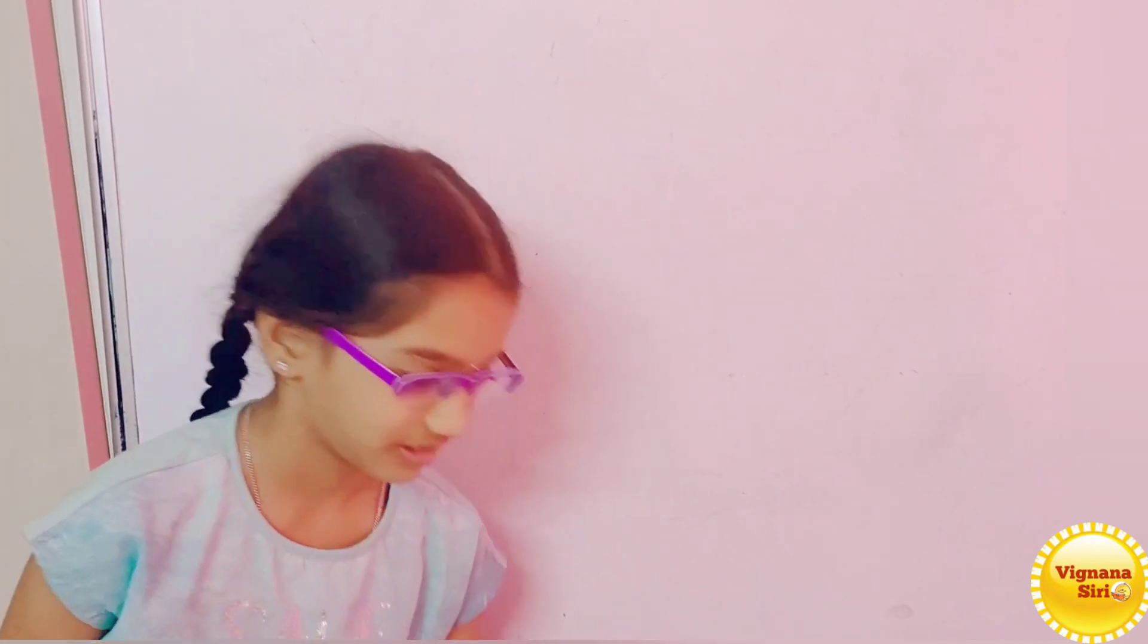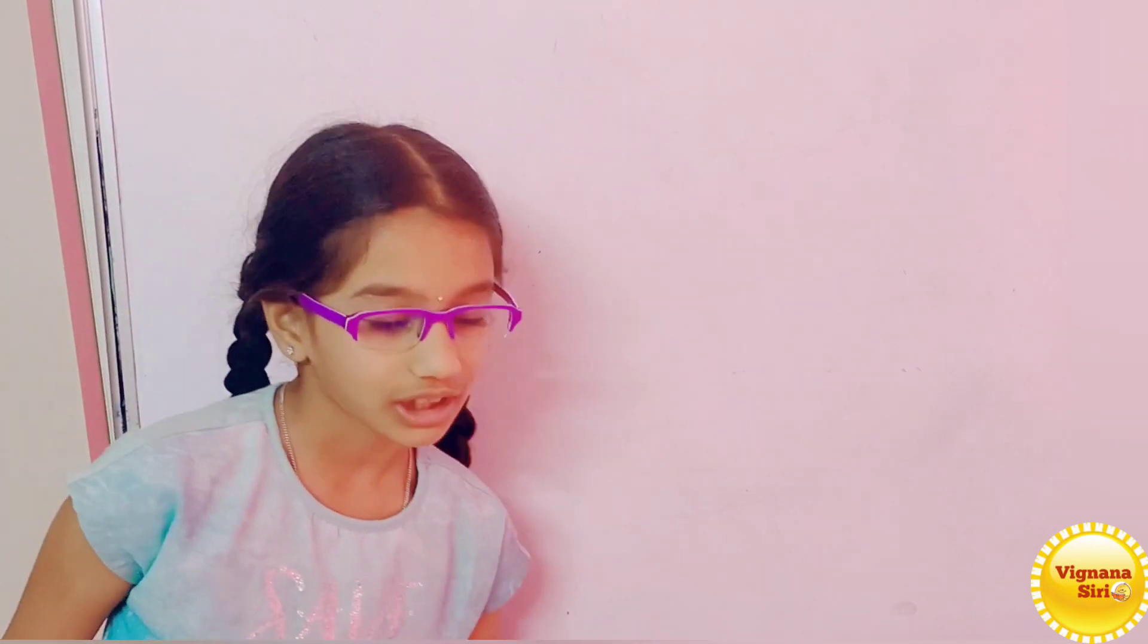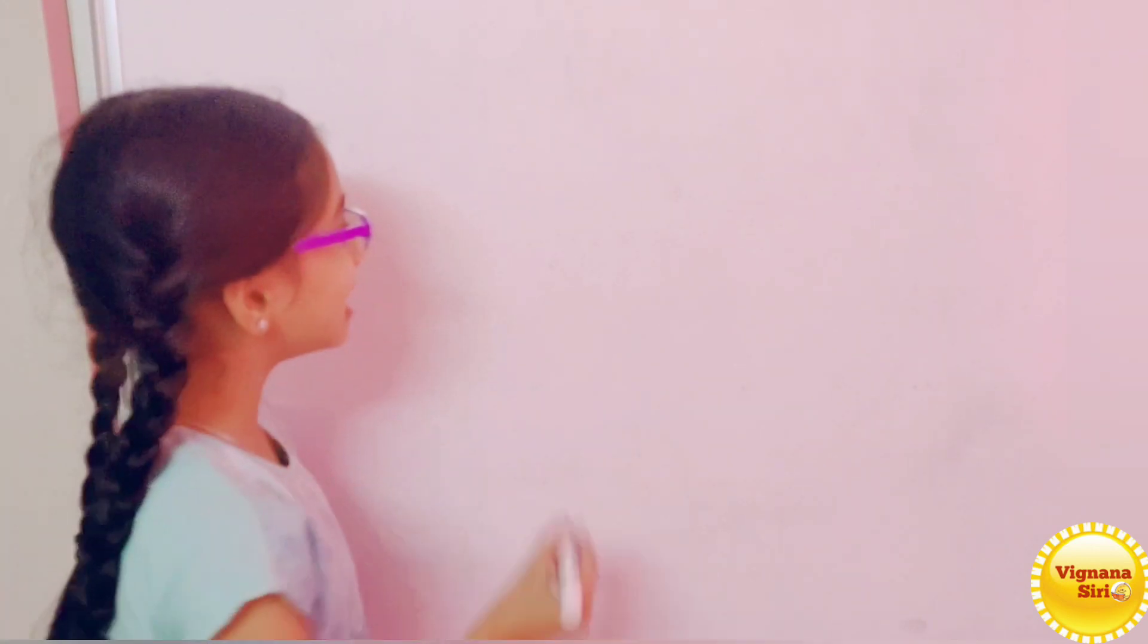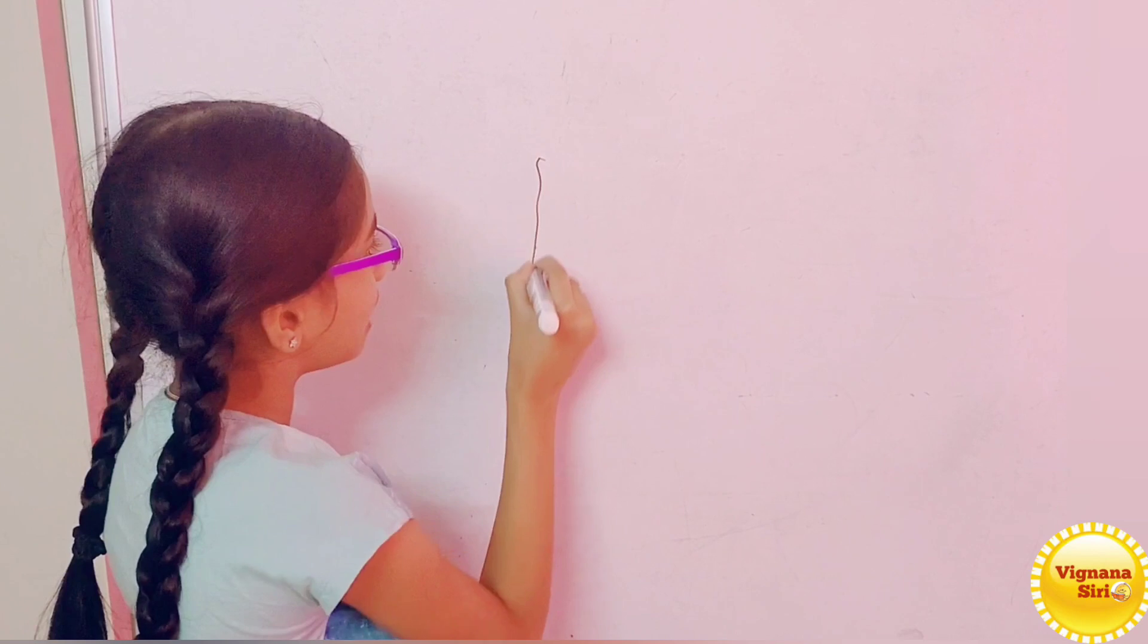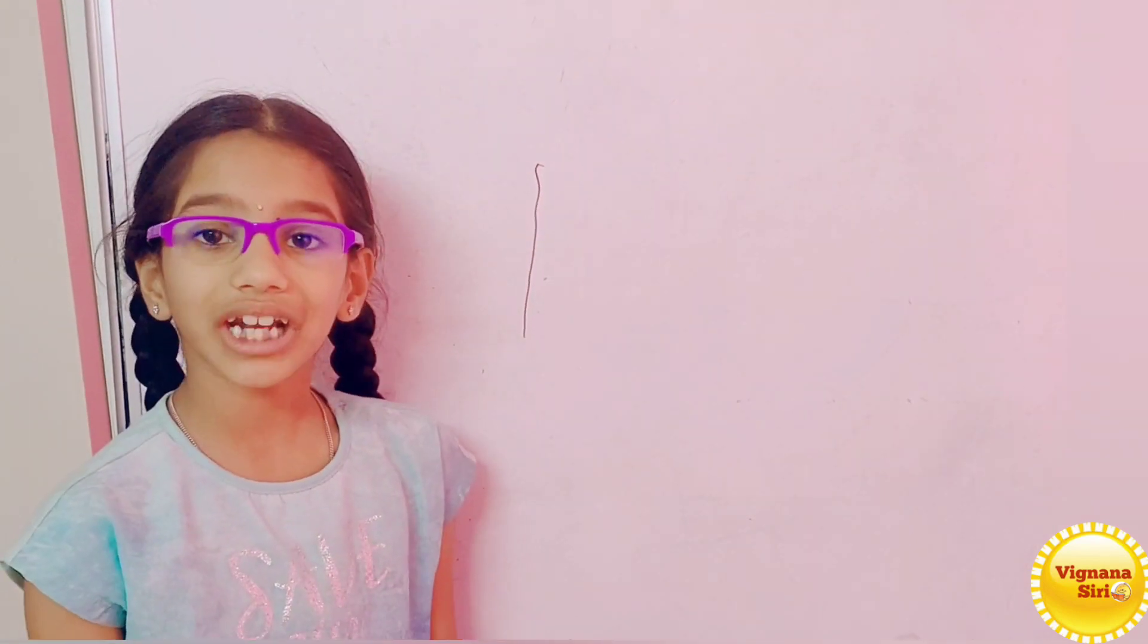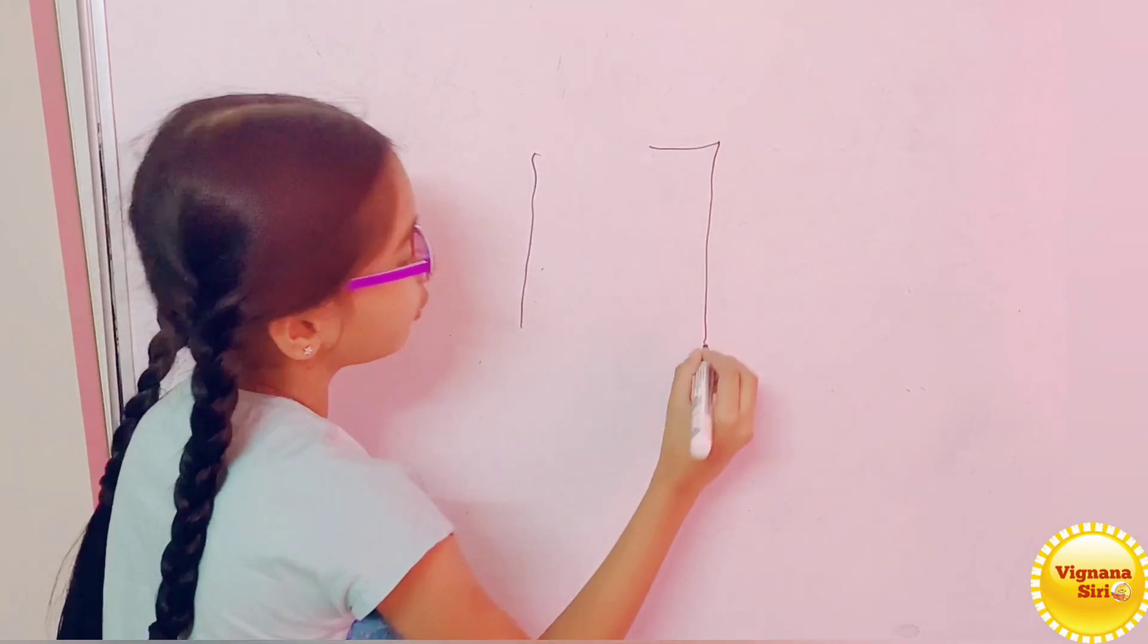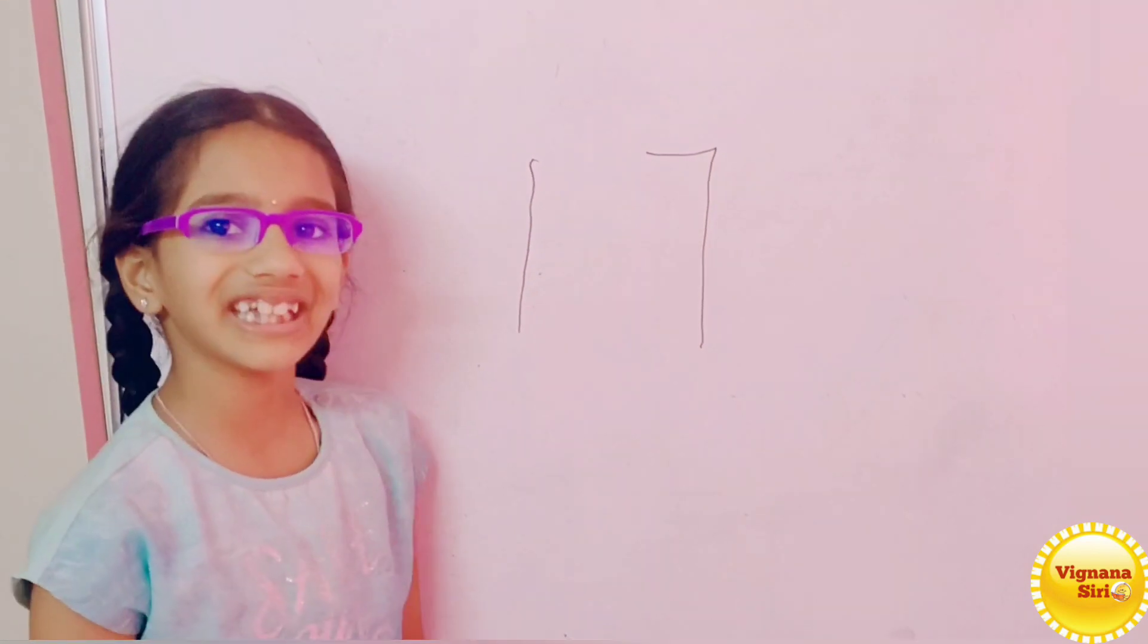Before going to the class, I will show how to write on the mind code. You know how to write number 1, so write number 1. And you know how to write number 7, so write number 7. Finish! 17!